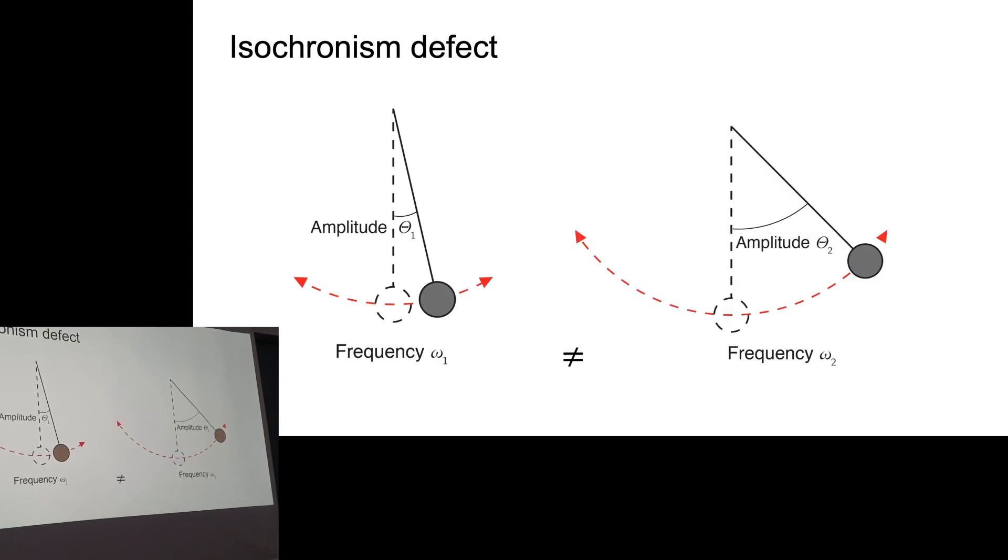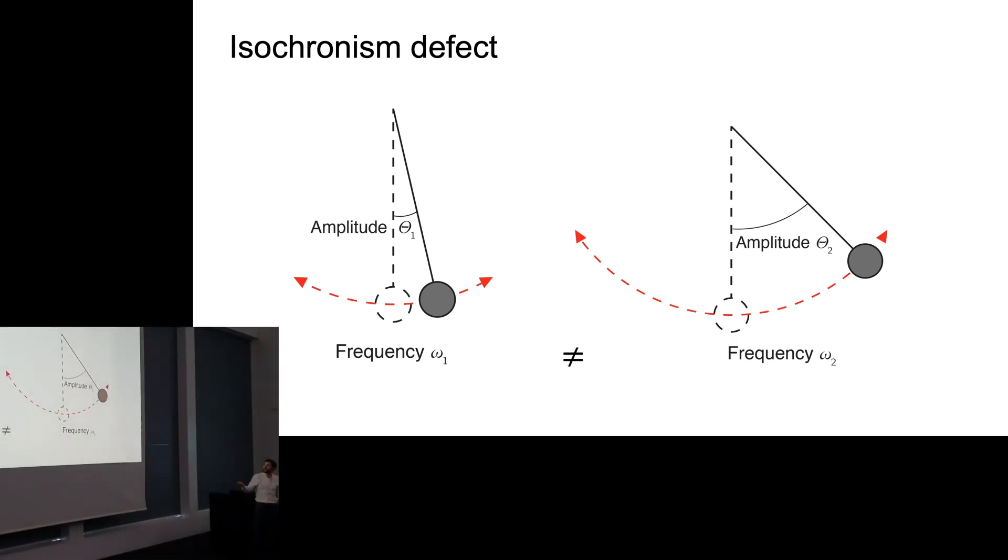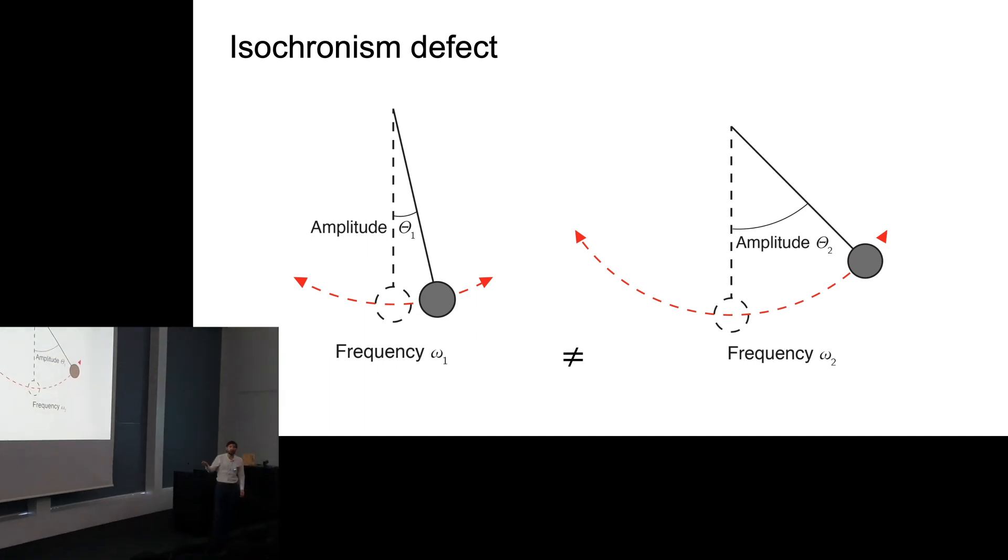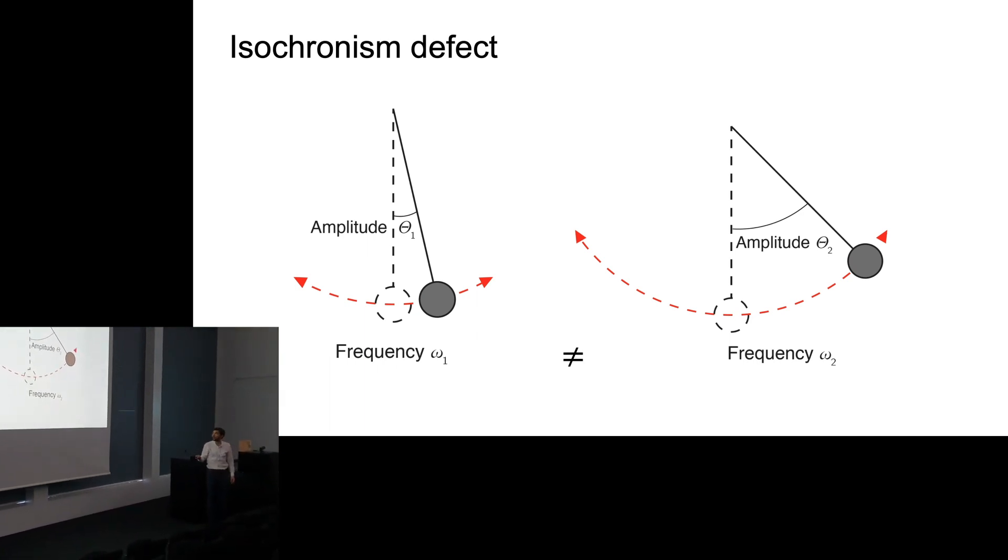It's called isochronism defect. That's the fact that the frequency of an oscillator depends on its amplitude. It's usually here on the pendulum, which becomes slower as its amplitude increases. And this is to be avoided for an accurate timekeeper because we always want to have regular frequency. That's the key.